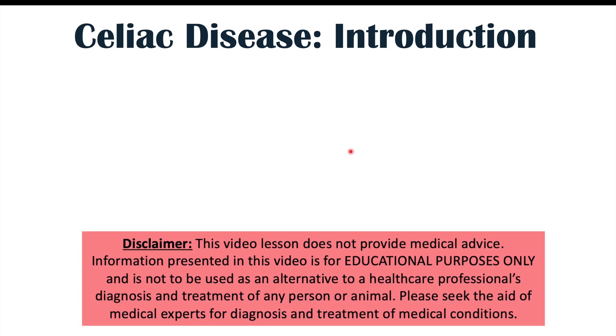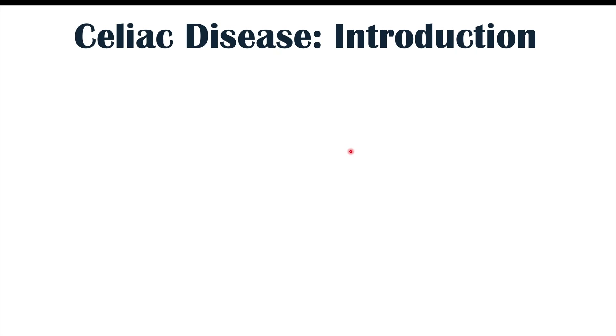Looking at your hands and especially your nails can tell you a lot about your health. Certain conditions are more prone to causing nail changes, and one of those conditions is celiac disease. We're going to talk about certain nail findings that can occur in celiac disease. Before we do, let's discuss what celiac disease is and some of its more common signs and symptoms.